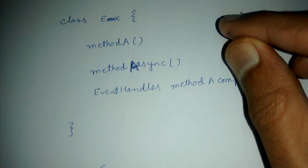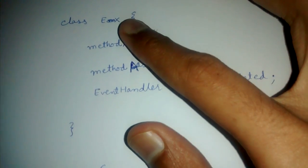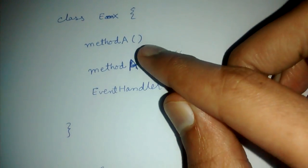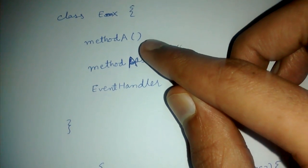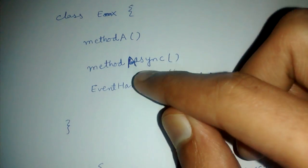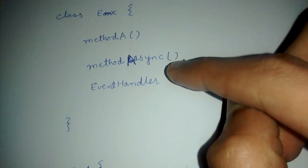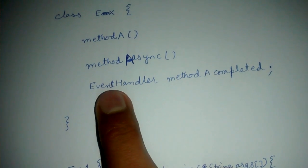This is an example class. Here is a method A which we want to call, and here is another version of method A which is method A async. In this async version, we attach an event handler.